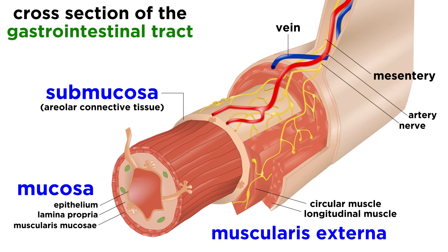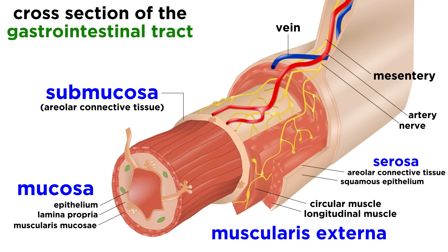Surrounding this layer is the muscularis externa, which is the muscular layer that performs segmentation and peristalsis, which help the food along the tract as we discussed earlier. It is made of an inner circular layer and an outer longitudinal layer. And lastly we continue to find the serosa. This is areolar connective tissue covered with a single layer of squamous epithelial cells, that form a mesothelium. We should also note the intrinsic nerve plexuses, which are the submucosal nerve plexus in the submucosa, and the myenteric nerve plexus in the muscularis externa. These allow for communication all along the GI tract, and regulate digestive system activity.